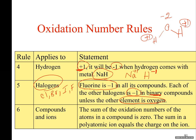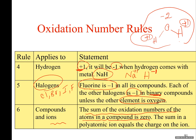Rule number six is used when the table does not define an oxidation number and we have to calculate it. The rule states: the sum of oxidation numbers of all atoms in a compound is zero. For example, in water: oxygen is minus two, and two hydrogens each contribute plus one, giving plus two. So plus two plus minus two equals zero — the total is zero.